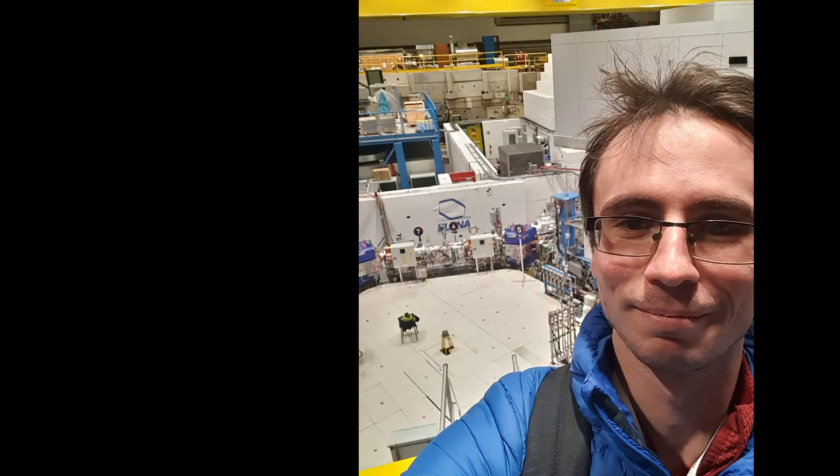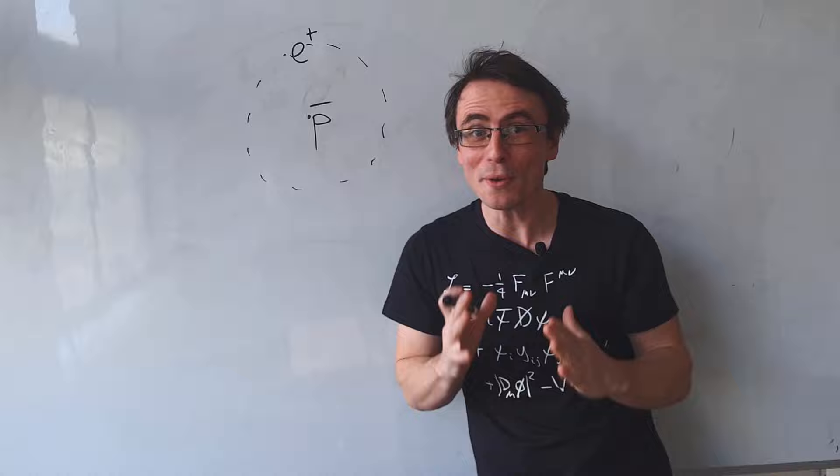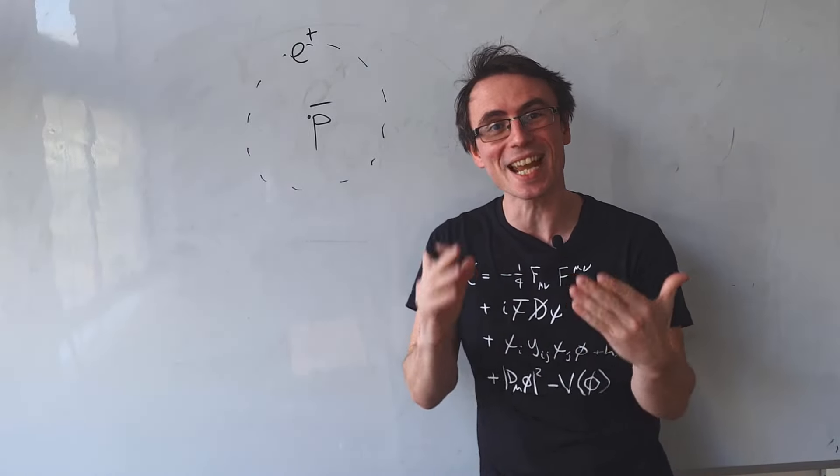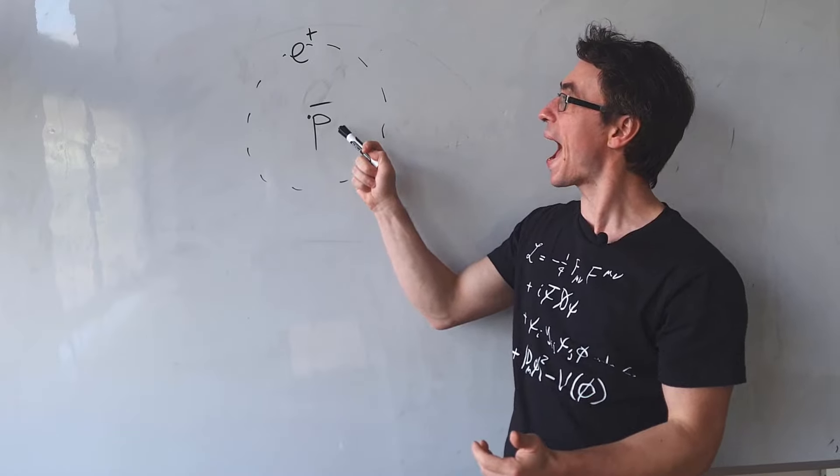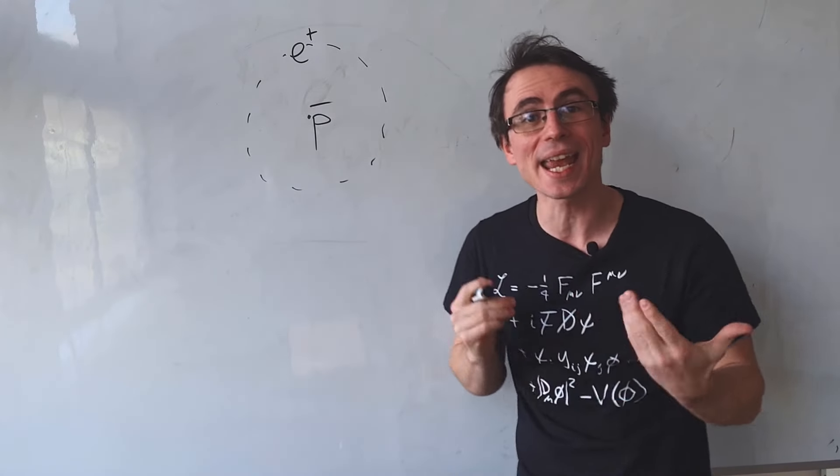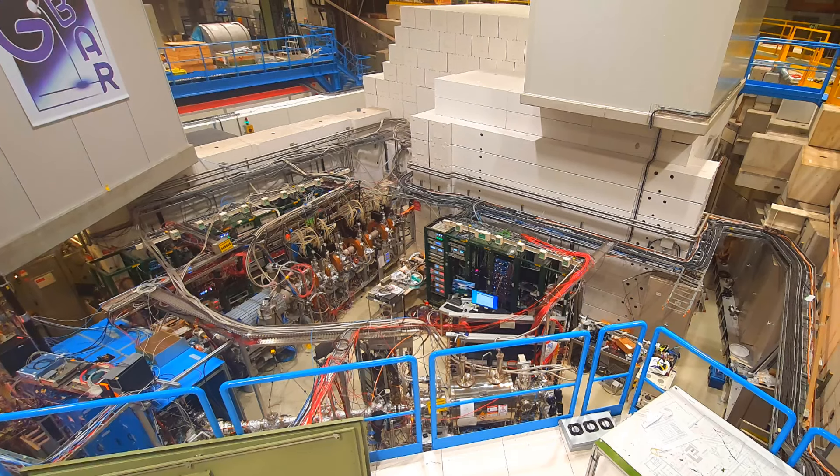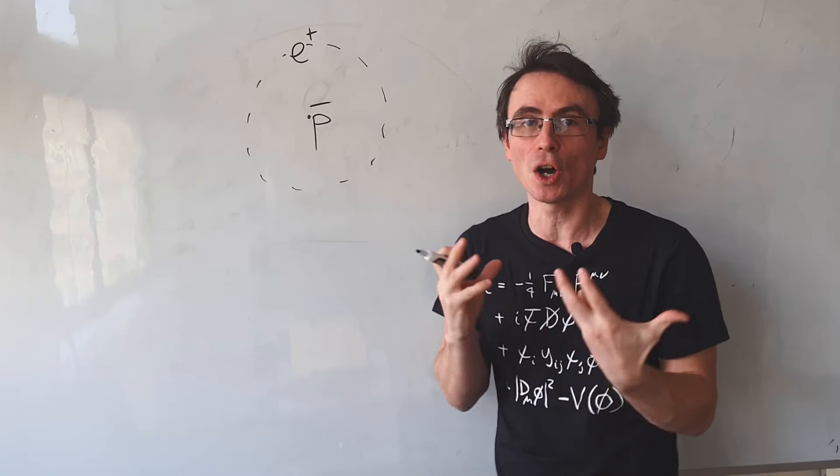Some of those antiprotons are used to create anti-hydrogen, which consists of an antiproton and a positron. In the g-bar experiment, which is currently underway, they're studying how they behave under the influence of gravity.